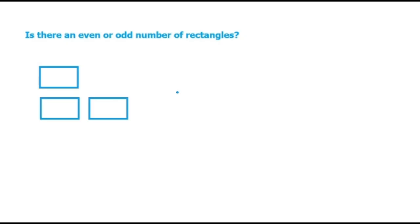So, for this particular one, these cannot be matched in pairs because there's one left over. If we match these two together, these make a pair. This doesn't have a pair, it's by itself. So, we know then that three is an odd number.